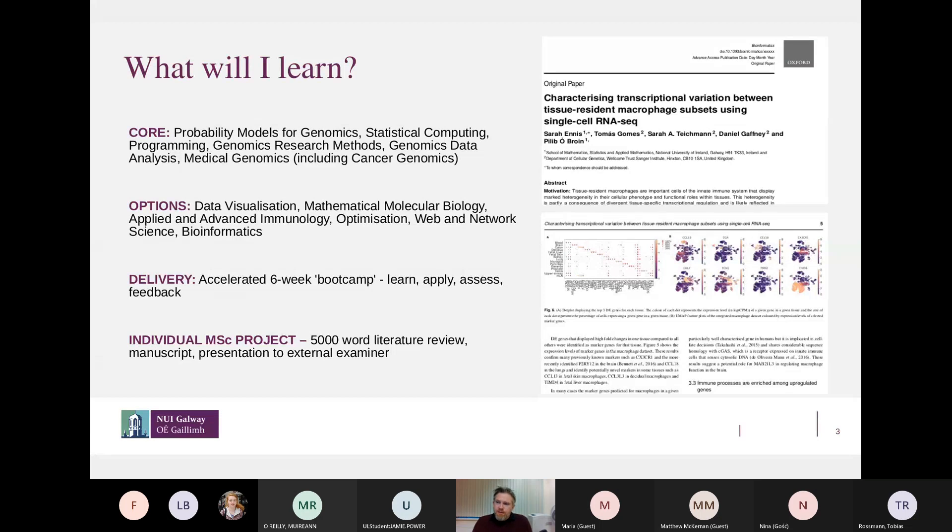In terms of delivery, the program is a little bit different from your standard masters in that we have what we would call an accelerated six week boot camp where we have these workshop style lectures. So what that means is rather than taking a module in probability in week one and then seeing another one in week two, you actually would take a concentrated week with an individual lecturer focusing on a particular topic.